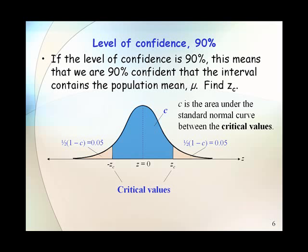So we have that C is the area under the standard normal curve between the critical values, and we have that area in each tail is 0.05.